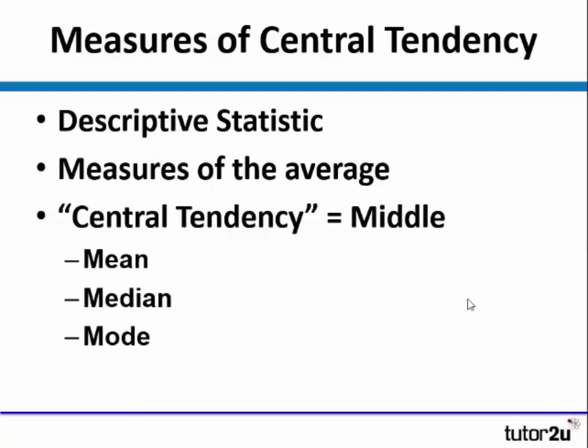Measures of central tendency are descriptive statistics, and typically they are measures of the average. Central tendency simply means what is happening in the middle of the data set. There are three different measures of central tendency: mean, median, and mode.